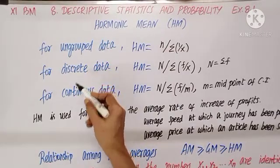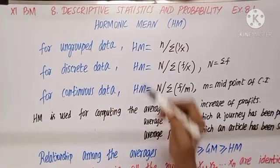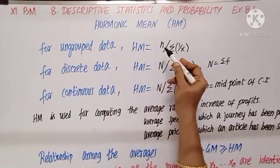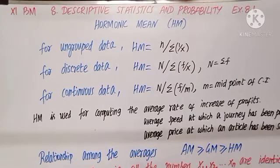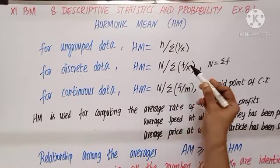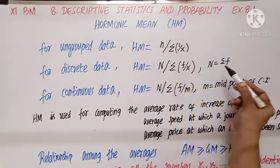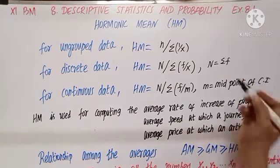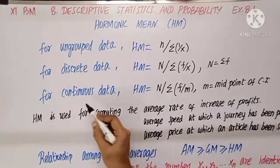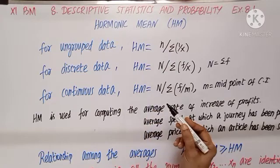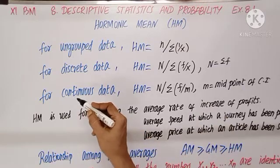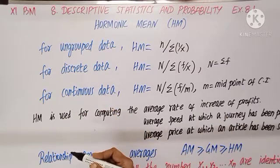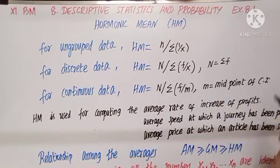For discrete data, HM is n divided by sigma(1/x). For discrete data with frequencies, HM is N divided by sigma(f/x), where capital N is sigma f, the total frequency. For continuous data, HM equals N divided by sigma(f/m), where m is the midpoint of the class interval.